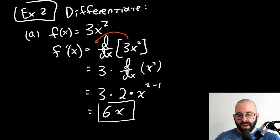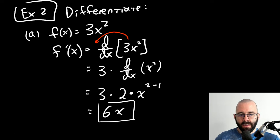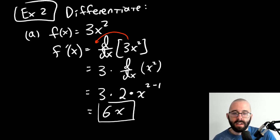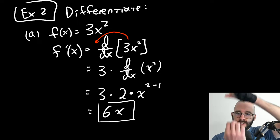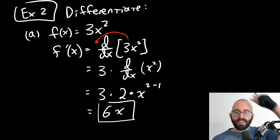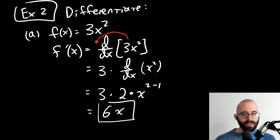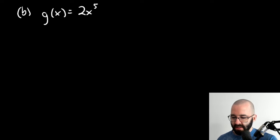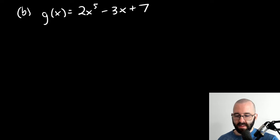Notice that multiplying a function by three — the derivative is also just getting multiplied by three. Multiplying a function by three is a vertical stretching, so we vertically stretch the function values, but it's also vertically stretching the slope. Now let's do part b: g(x) = 2x⁵ minus 3x plus 7.